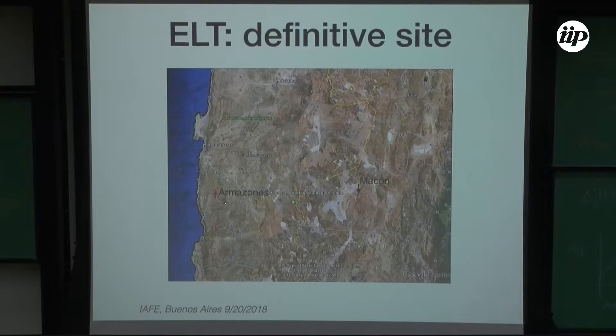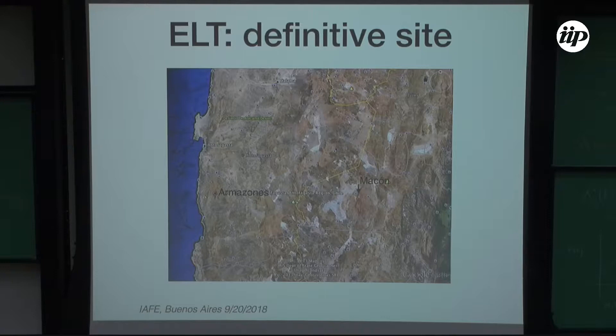The reason we started thinking about this place is that the quality of the site was discovered by the European Southern Observatory when they were looking for candidates for the Extremely Large Telescope. One of the candidates was precisely Macón. The problem is that the logistics are almost impossible — the nearest town is 200 kilometers away, very isolated with no facilities. That's probably why ESO decided to look at the same latitude but on the Chilean side of the Andes.